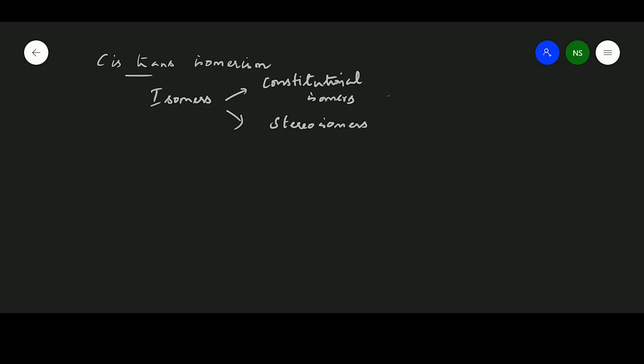Isomers are compounds having the same molecular formula but different structures. Isomer is actually a word derived from Greek language meaning made up of same parts.